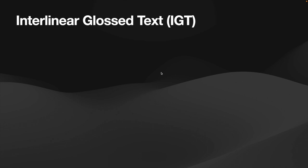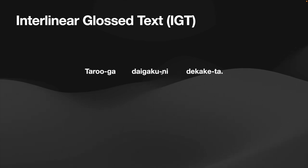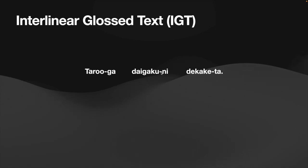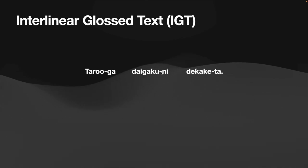Let's take a look at what IGT looks like. Here's an example in Korean. The first line of IGT consists of a transcription of the words in the original language. These may be segmented into morphemes, where morphemes are the smallest meaning-bearing unit in the language. Morphemes include both stems, which provide meaning for a word, and functional morphemes, which modify the word's grammatical properties.